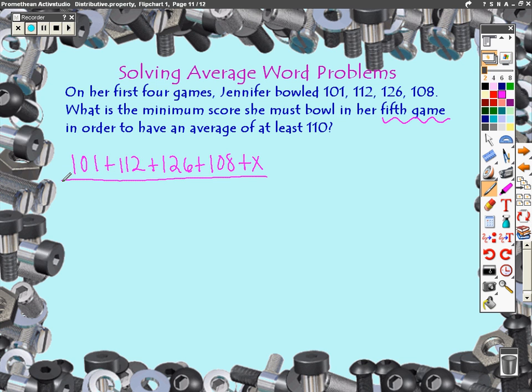So at the end of all her bowling, how many games will she have played? She'll have played one, two, three, four, five. So I'm going to divide this by five and what do I want this to equal? It tells you at least 110. Can it be over 110? Sure it can. It just can't be less than. So it has to be greater than or equal to.